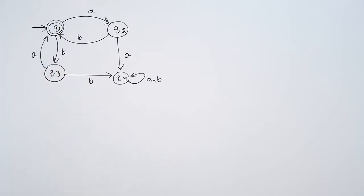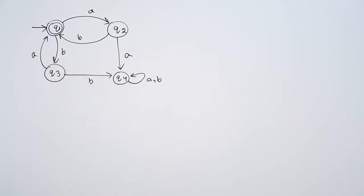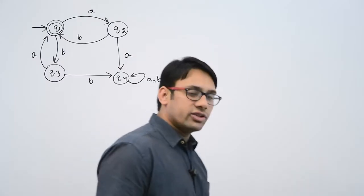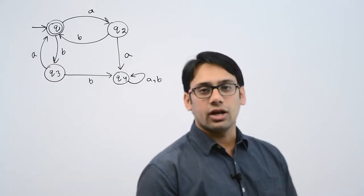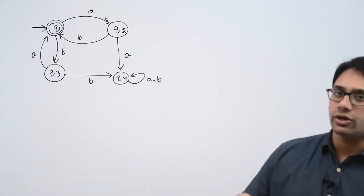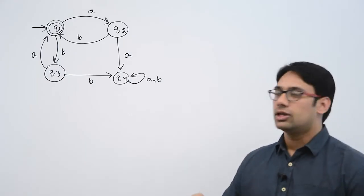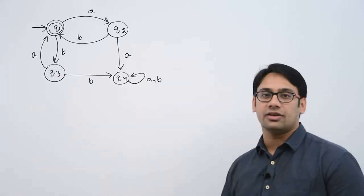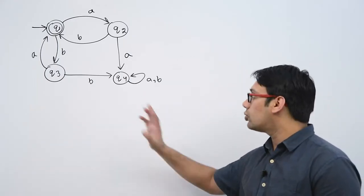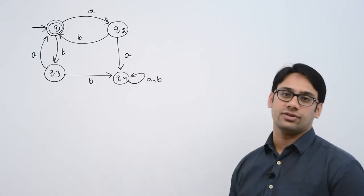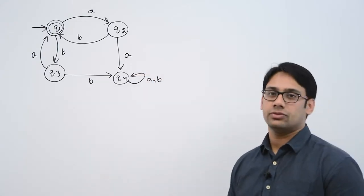We have four states here: Q1, Q2, Q3, and Q4. First of all, you need to understand which states are unreachable from the start state. If you want to convert to a regular expression, remove all states which are unreachable. Here there are no unreachable states — every state is reachable.